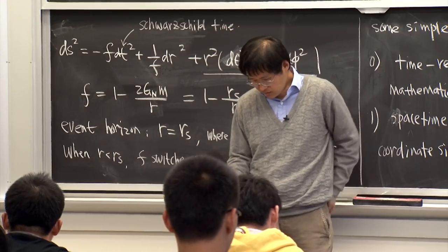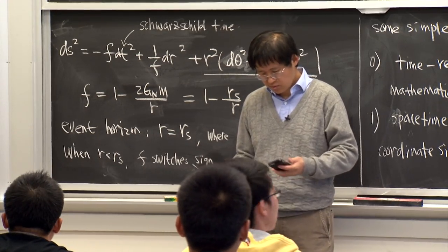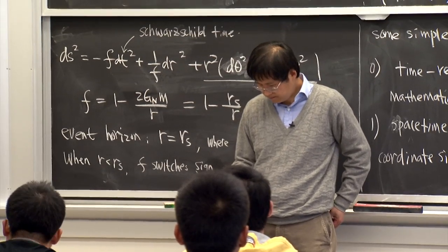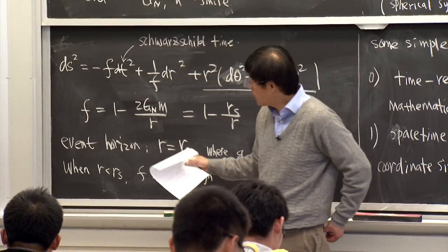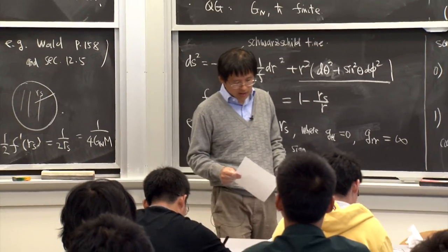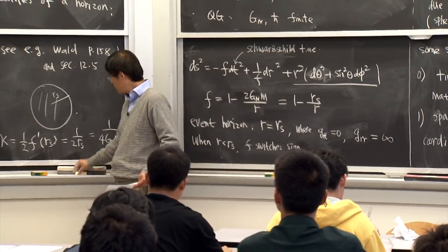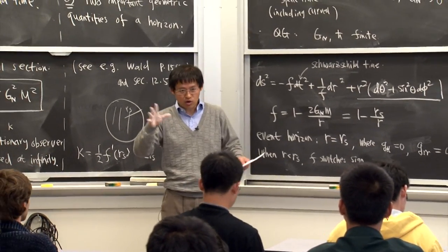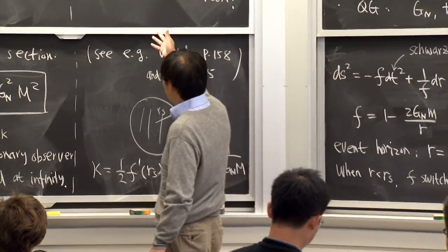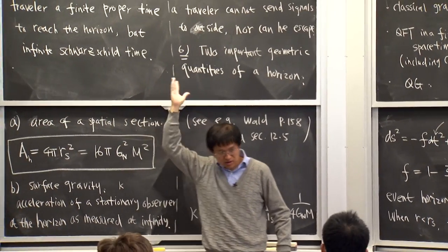I think this is a good place to stop. Next time we will describe the causal structure of the black hole, and you will see explicitly some of the statements made today — in particular that the horizon is just a coordinate singularity.